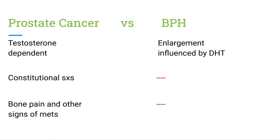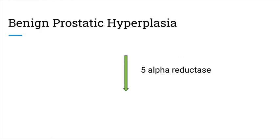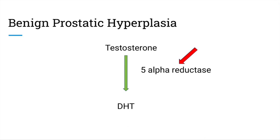The pathophysiology and treatment of BPH can be understood using this pathway: testosterone is converted to DHT via 5-alpha reductase. DHT mediates the majority of testosterone's effects and has a higher affinity for androgen receptors. This DHT is responsible for the prostate enlargement seen in BPH.